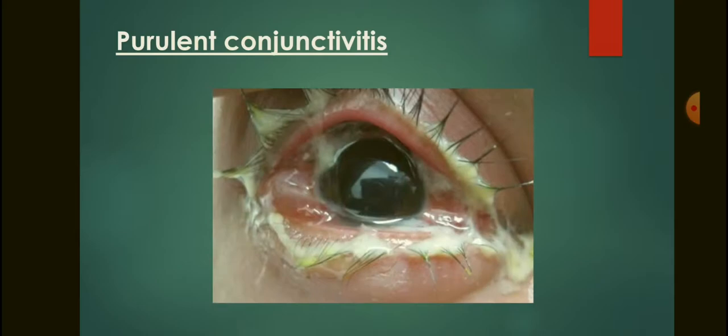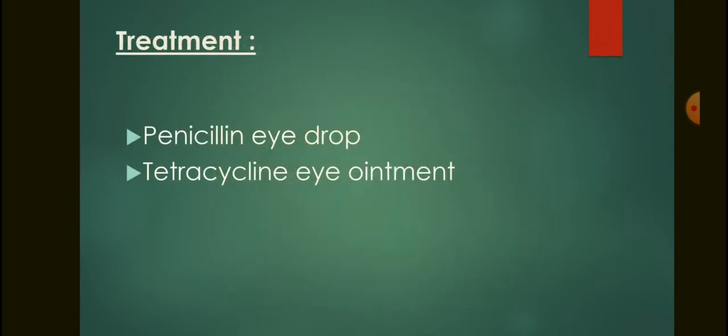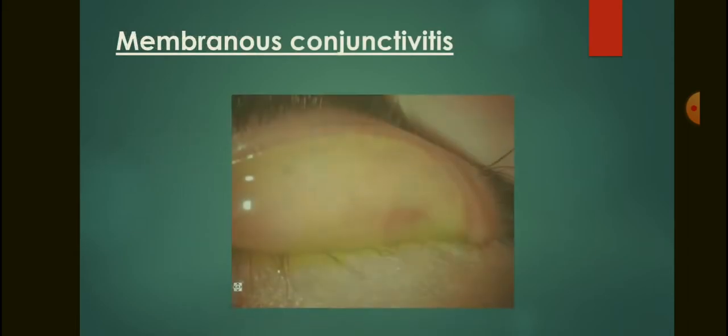Purulent conjunctivitis is the severe form of mucopurulent conjunctivitis. The causative organism is Neisseria gonorrhoeae. The symptoms are quite similar to mucopurulent conjunctivitis, with the main difference being more discharge. Treatment includes penicillin eye drops and tetracycline eye ointment.